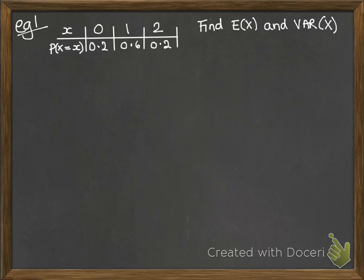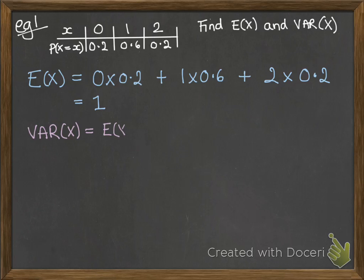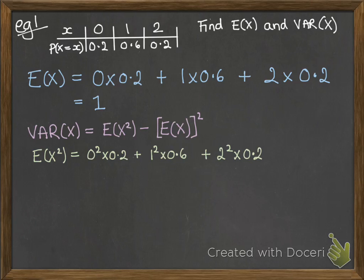So it's easiest to see how to use this with an example. So here's our table of probability distribution. We want to find e of x and the variance of x. So e of x you've seen how to do before. So that's each of our x values times the probability, then add it up. The variance of x is e of x squared minus e of x all squared. So e of x squared, we do that in the same way as e of x, but each of those x values gets squared, then times by the probability.